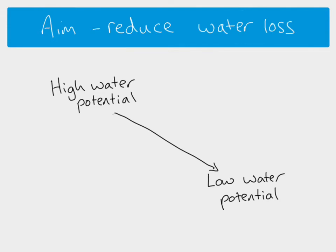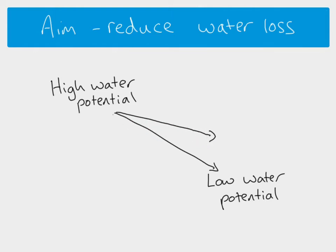In this situation, the high water potential is in the cells of our xerophytes, and the low water potential is in the air. We're in very dry areas, so the air has very low humidity. Anything that the plant can do to decrease the steepness of that water potential gradient is going to help reduce water loss, because the steeper the gradient, the more quickly water will be lost.